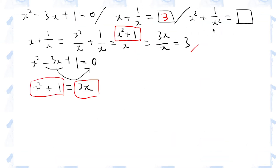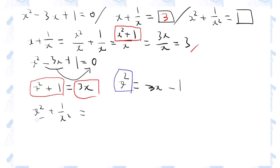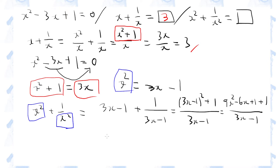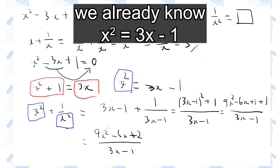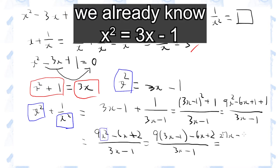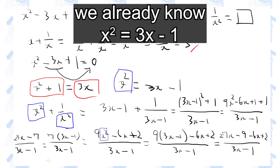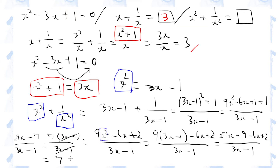Now let's consider the second expression. By rearranging the original quadratic equation, we get x squared equals 3x minus 1. Substituting this value, we get another term with x squared in it, and we arrive at an integer. This integer, 7, is the final answer.